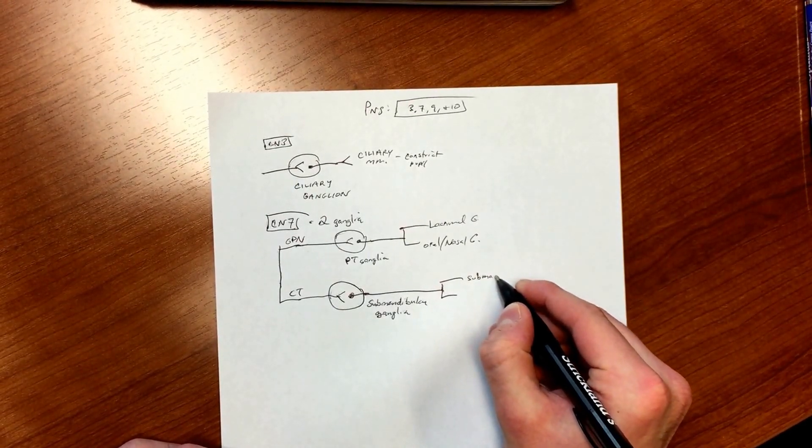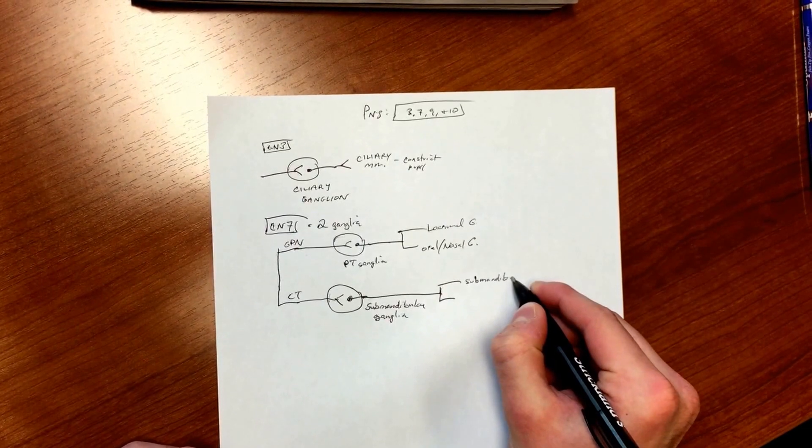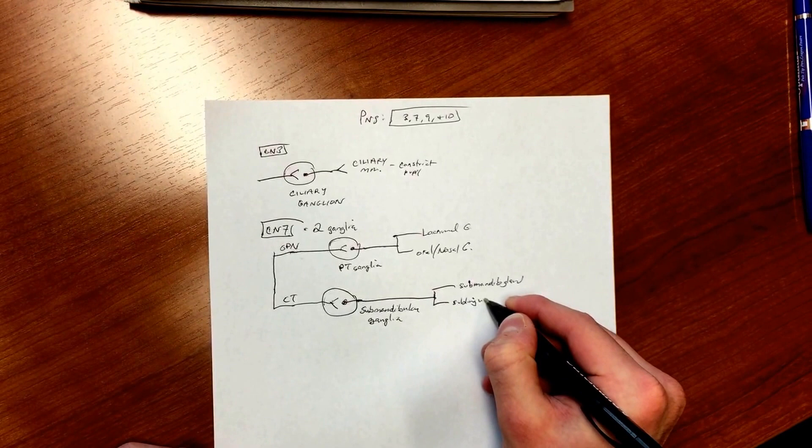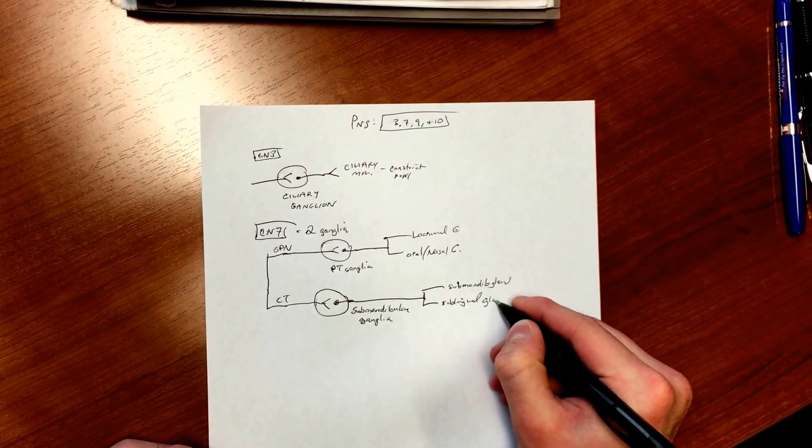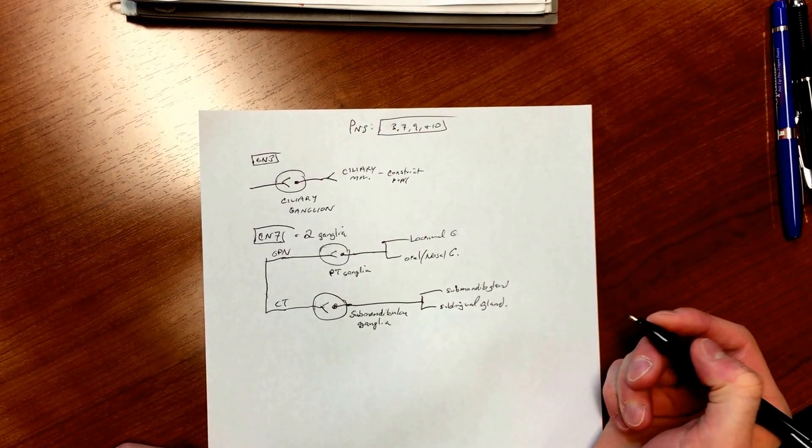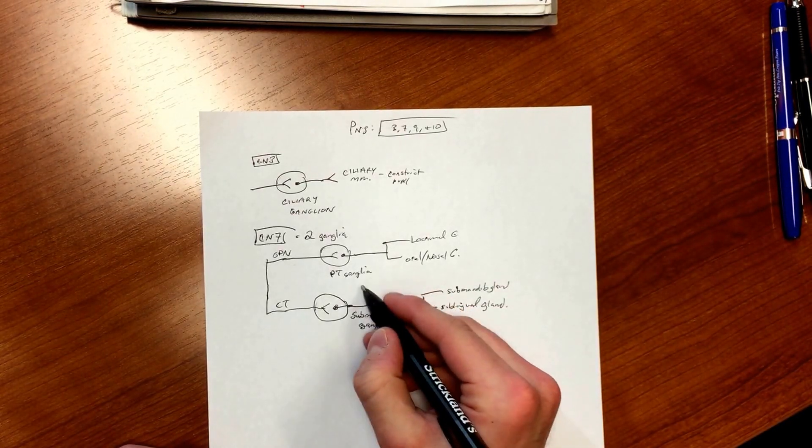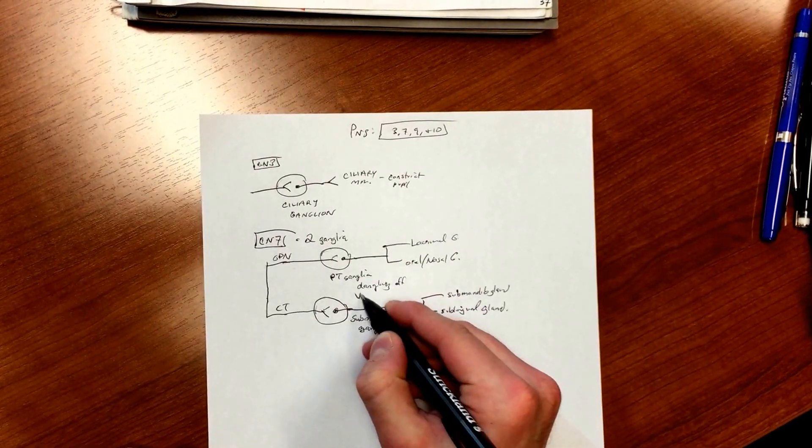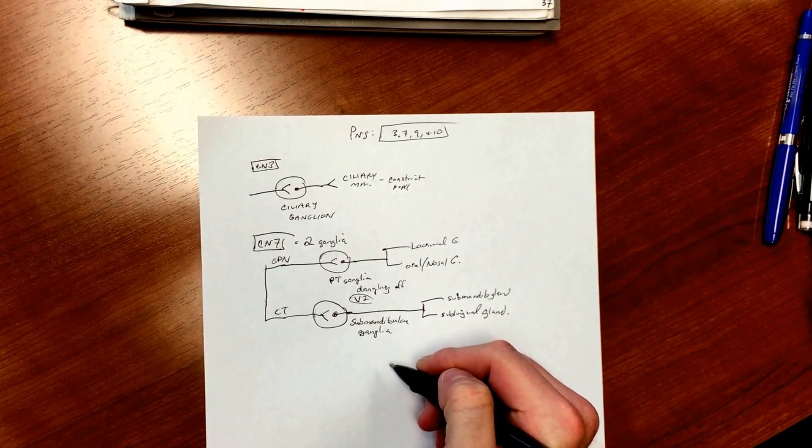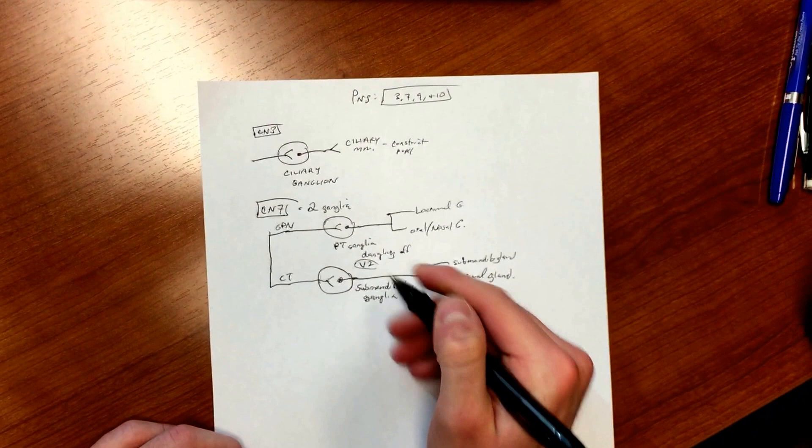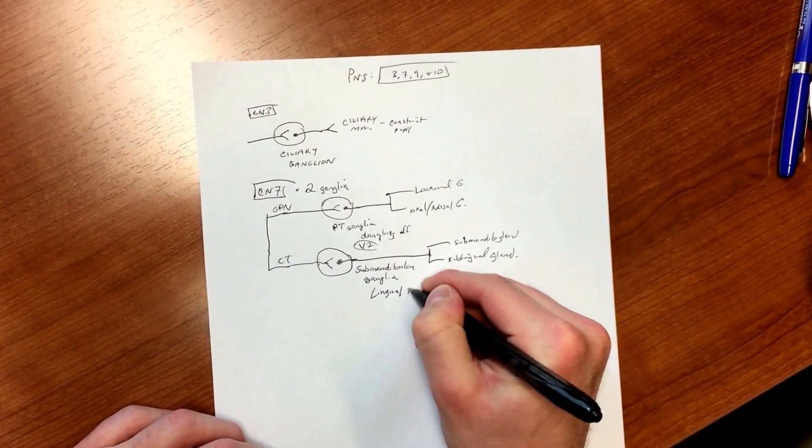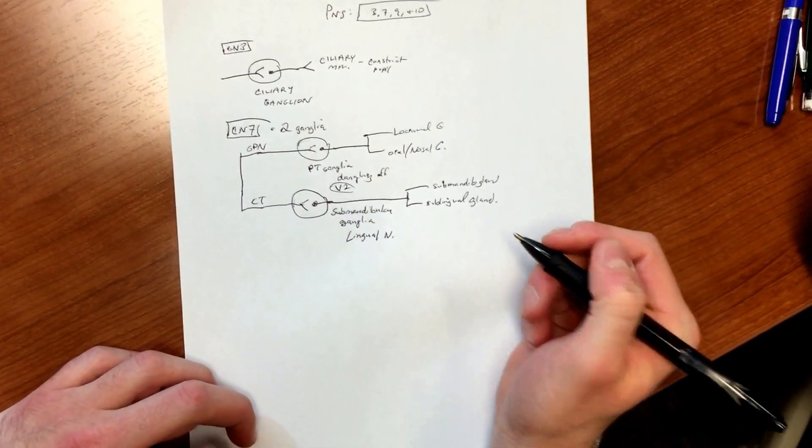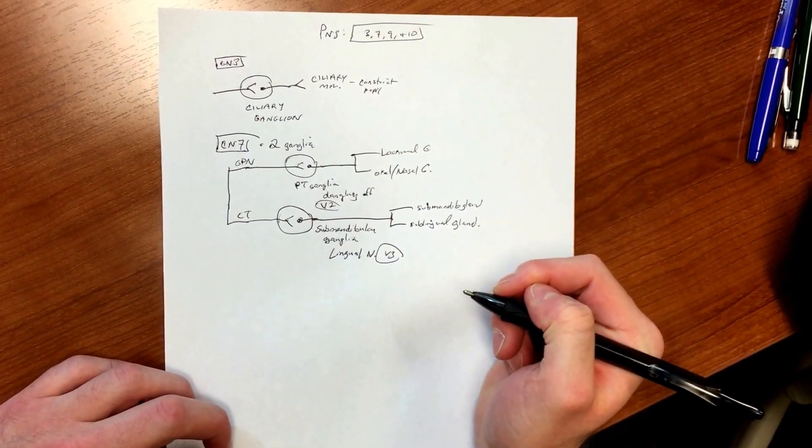Things to keep in mind: PT ganglia is hanging off of V2, and then submandibular ganglia is hanging off of lingual nerve, and lingual nerve is V3. That's pretty much it for cranial nerve 7.